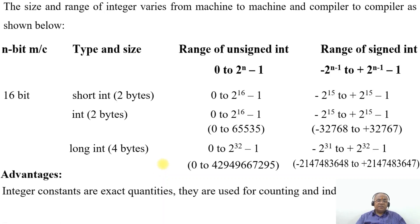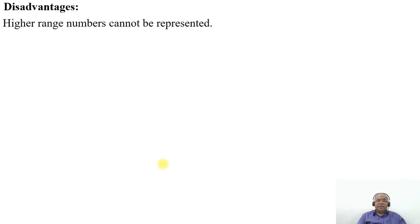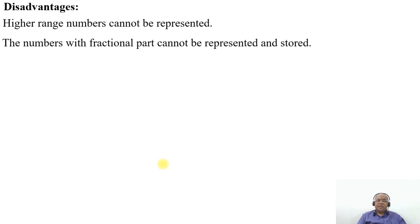The advantages are that integer constants are exact quantities. They are used for counting and indexing because of the non-existence of the decimal point in the integer. The disadvantages are that higher range numbers cannot be represented, and numbers with a fractional point cannot be represented and stored.